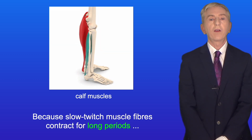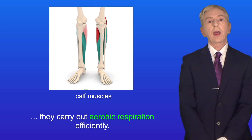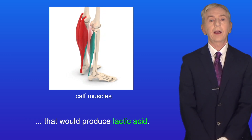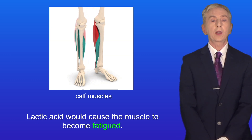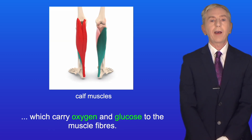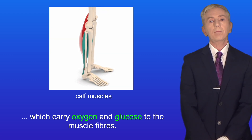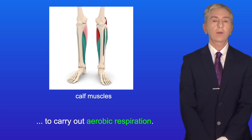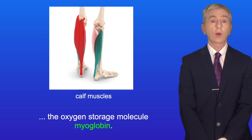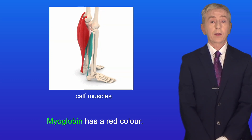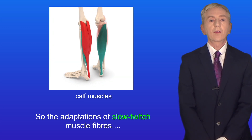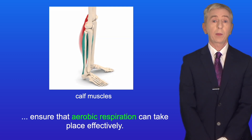Because slow twitch muscle fibers contract for long periods, they carry out aerobic respiration efficiently. If anaerobic respiration took place, it would produce lactic acid, causing the muscle to become fatigued. So slow twitch muscle fibers are well supplied with blood vessels, which carry oxygen and glucose to the muscle fibers. They also have a large number of mitochondria to carry out aerobic respiration, and they contain the oxygen storage molecule myoglobin. Myoglobin has a red color, giving slow twitch muscle a red coloration. These adaptations ensure that aerobic respiration can take place effectively.